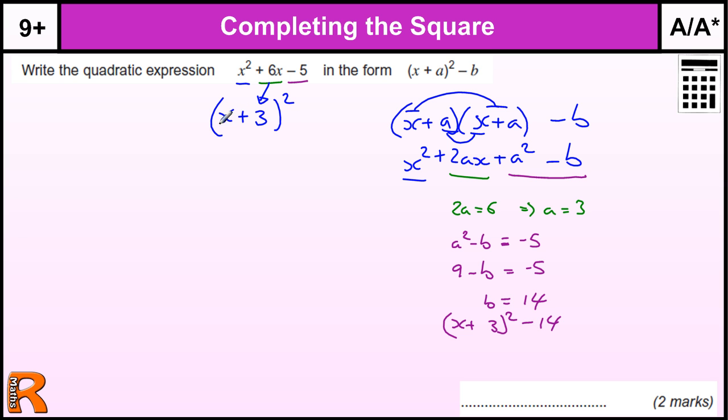Then we realize when we multiply out this bracket, we've got 3 times 3, which is the A squared part. Where's that? Here it is. A squared minus B. This A squared part is going to come from this 3 squared.